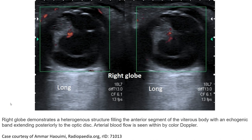This is a second ultrasound case of the eye representing PHPV, where the image shows a heterogeneous structure filling the anterior segment of the vitreous body with an echogenic band extending posterior to the optic nerve. Arterial blood flow is seen within the stalk on Doppler.